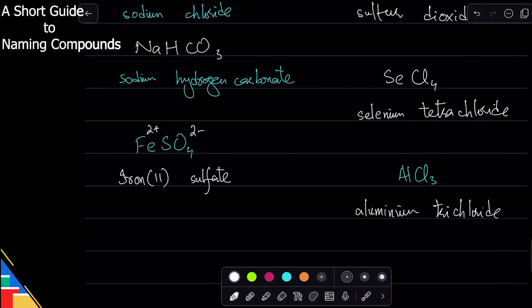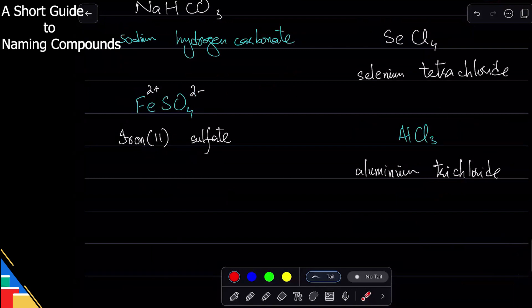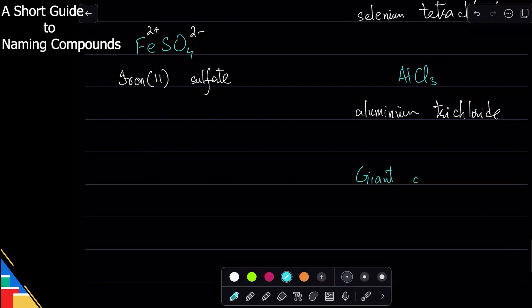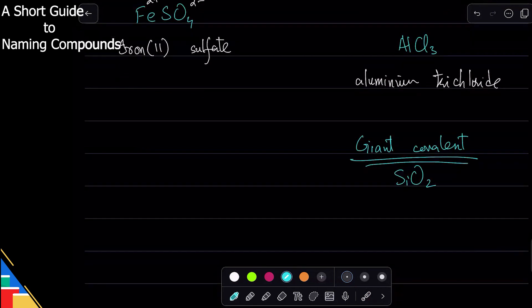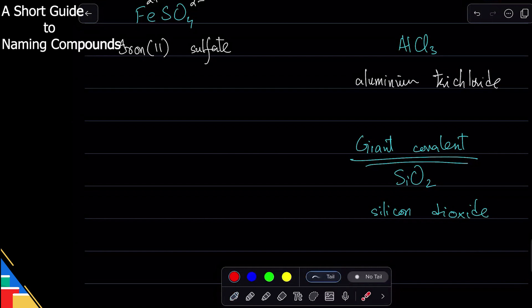If you read the name and it has numbers like tri, you'll know it has covalent bonding and it's a molecule. The third case is giant covalent structure. Giant covalent is the same thing - for example, SiO2 is silicon dioxide. It doesn't make a difference whether it's simple covalent or giant covalent.